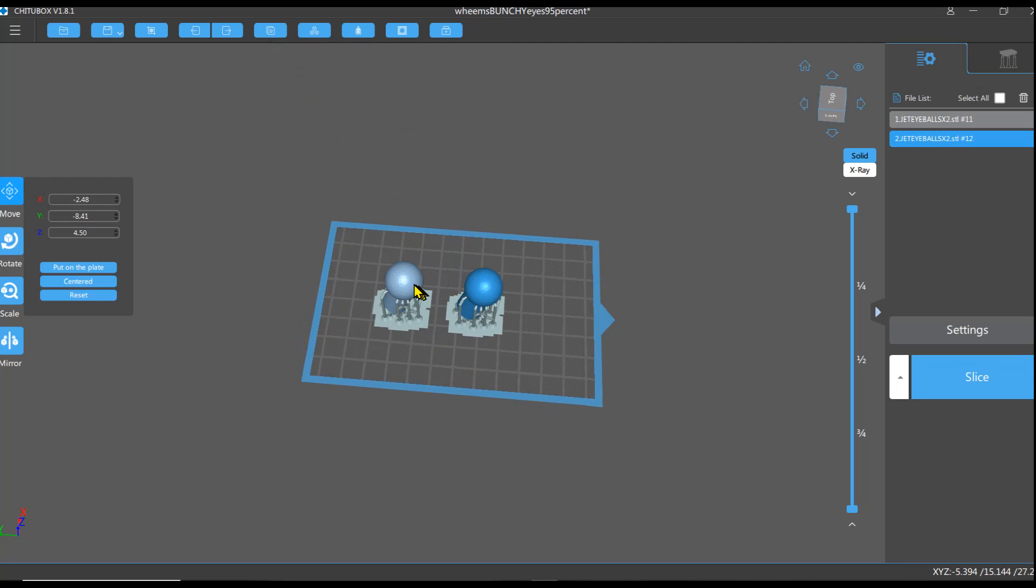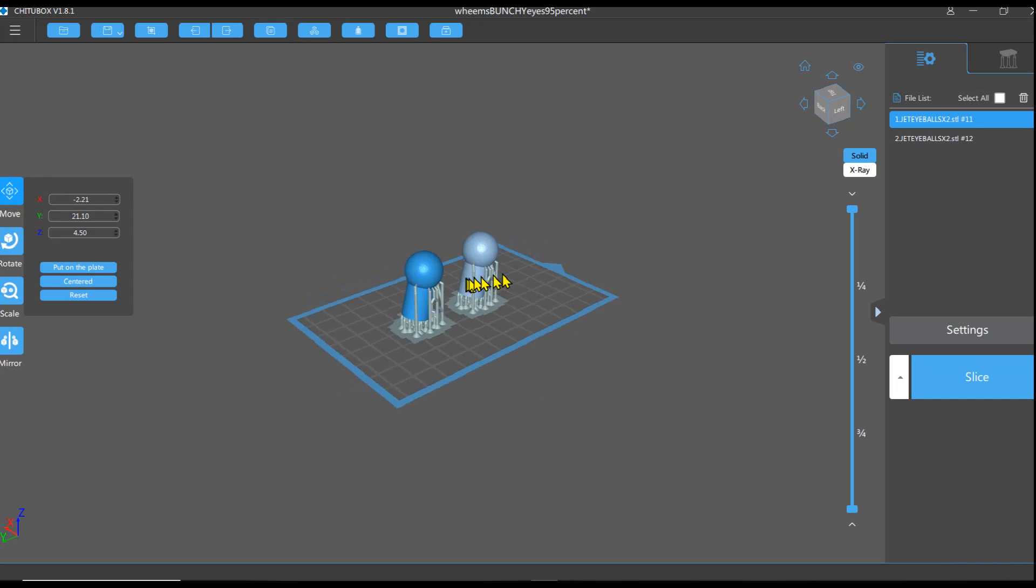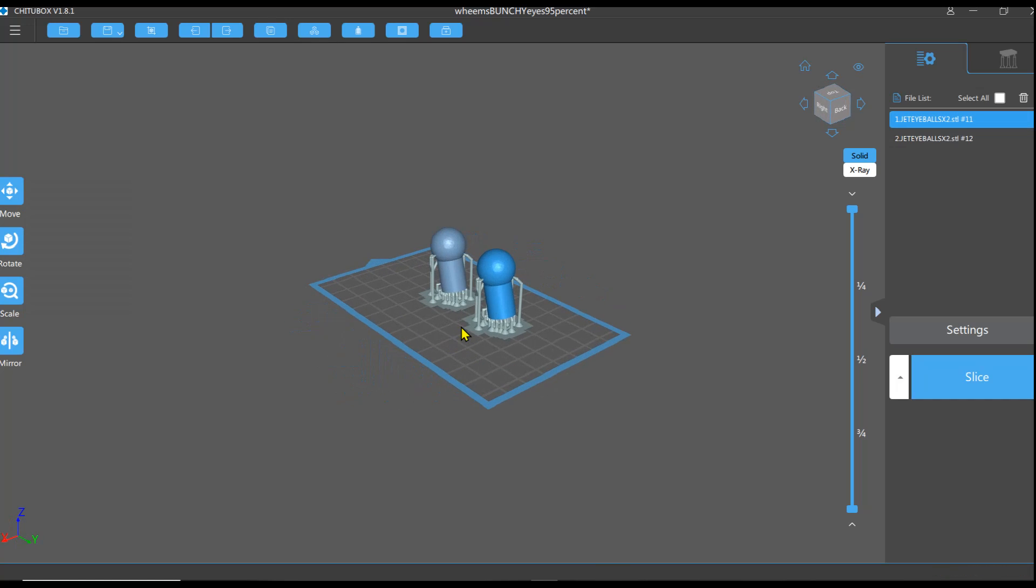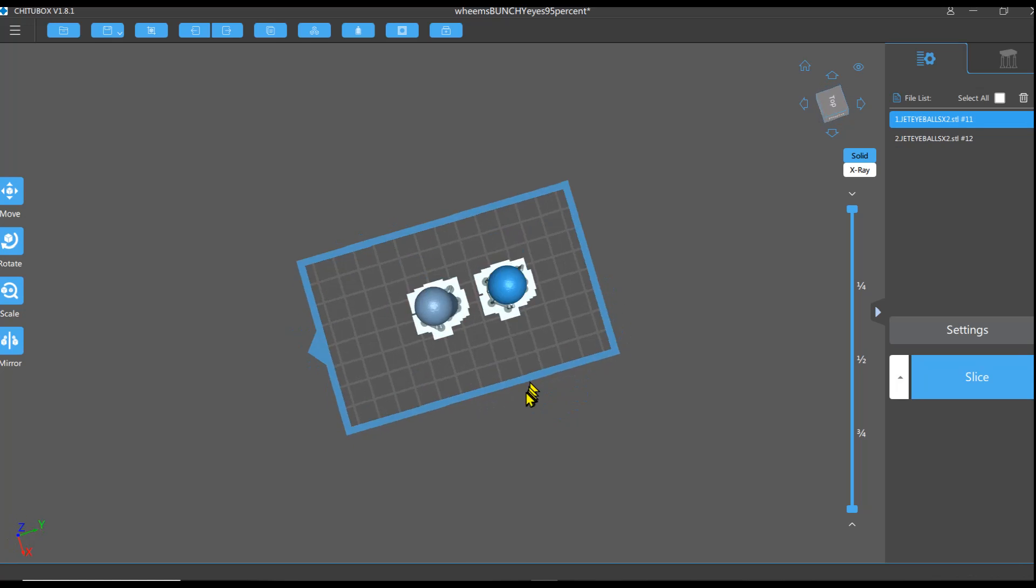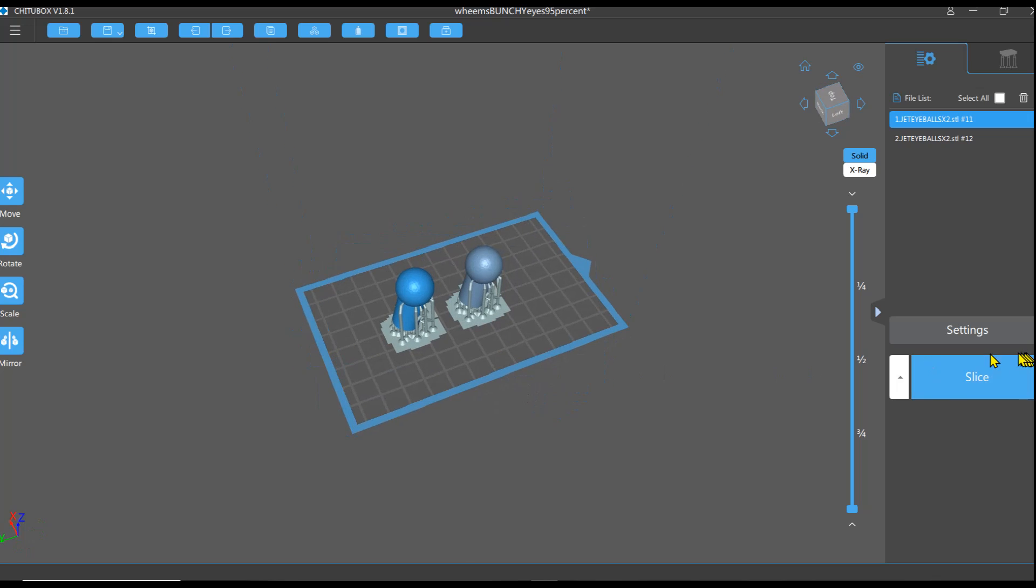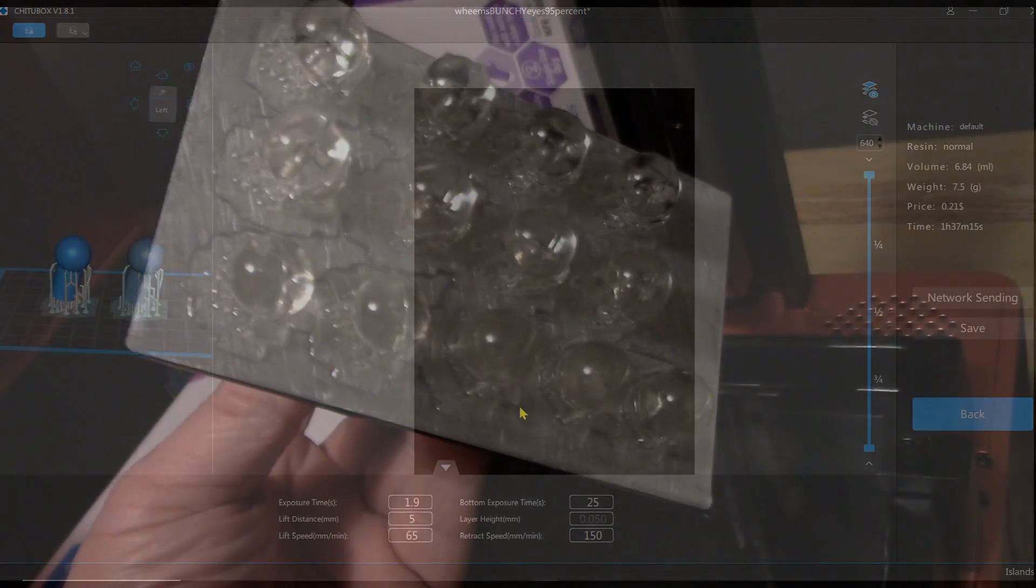Two lenses. On this project, it's just two identical lenses. You may want to check on your project if there's a left and a right distinct pieces needed. And there we are. Scaled at 95 percent. And you're just going to slice this and print this as normal. And let's see how this goes.